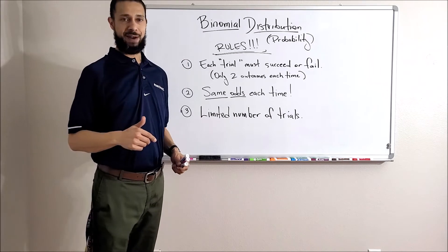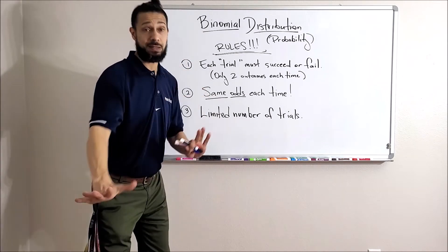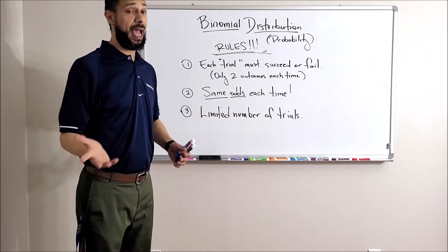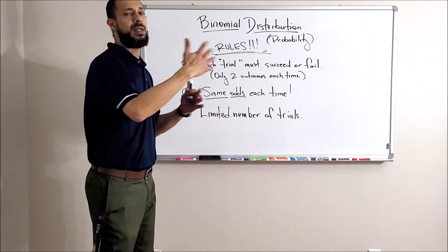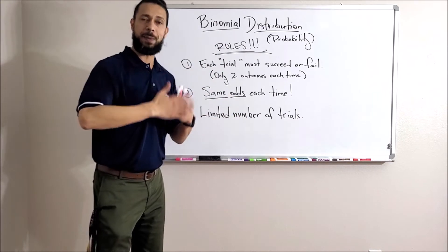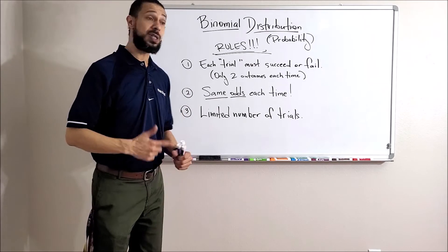Last rule: limited number of trials. We can't be flipping these coins forever. You can flip the coin a thousand or ten thousand times, but there has to be a limited number of times you're flipping that coin, because how can I count the number of successes unless I know the number of times I'm going to do the thing?